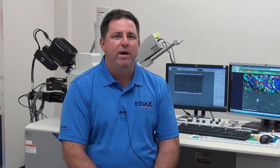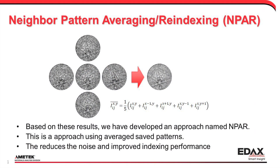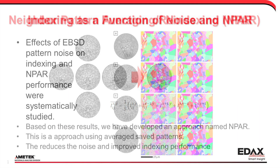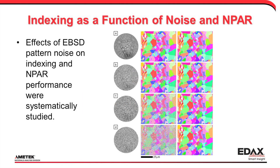With N-PAR, all the EBSD patterns are saved during mapping. For each point in the EBSD map, all the surrounding patterns are selected and averaged with the selected point. This patented approach reduces noise and improves indexing results, allowing the EBSD system to run at faster speeds and lower beam currents than previously possible.